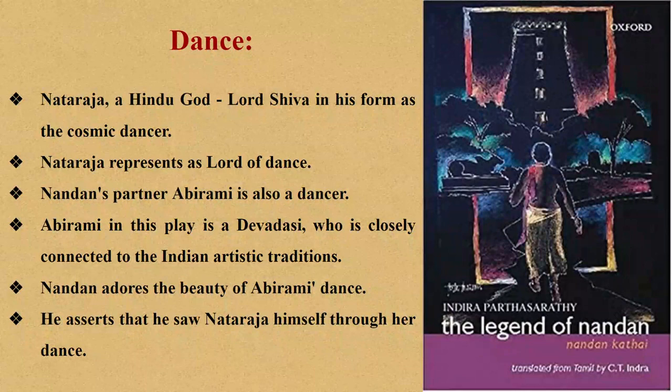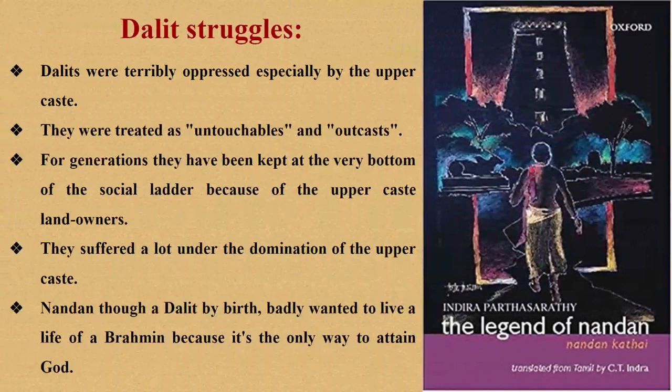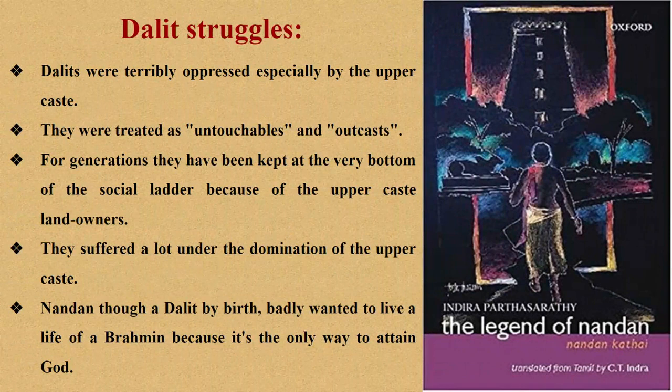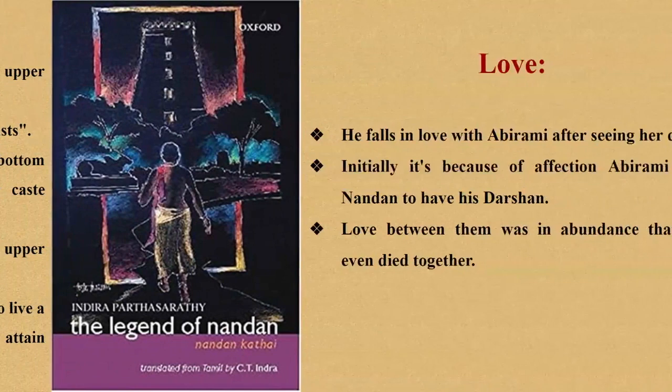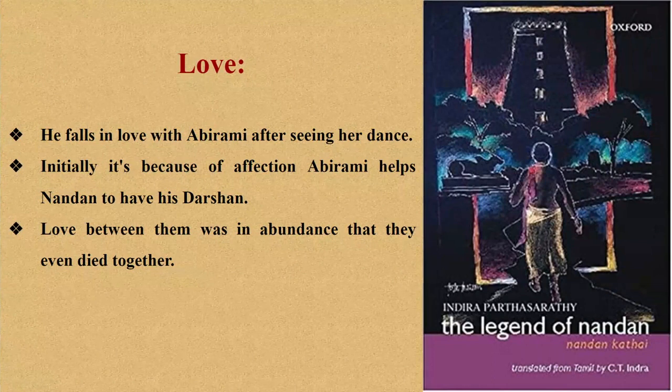Moving on to the next theme: Dalit struggles. Because of their caste, Dalits were terribly oppressed by the upper caste. They were treated as untouchables and outcasts, kept at the very bottom of the social ladder for generations. They suffered a lot under domination. Nandana, though a Dalit by birth, wanted to live a life of a Brahmin because he feels that is the only way to attain God. The theme of love is also present: Nandana loved Abhirami after seeing her beautiful dance, and Abhirami helped Nandana have his darshan inside the temple out of affection. Their love was so strong that they even died together, and significantly it was a love without complication in the name of caste.